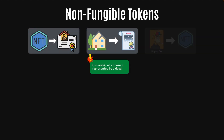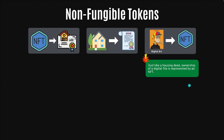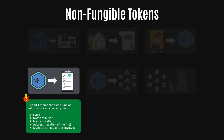NFTs are like housing deeds. Your ownership of a house is represented by a deed, and every house has a deed associated with its ownership — that's how you buy or sell a house. Just the same way that a housing deed represents a house, an NFT represents ownership over a digital file. And this could be any type of file — it doesn't have to be just artwork or a picture. It could be music like an MP3 file, or it could be a video file. Any kind of digital file can be turned into an NFT.